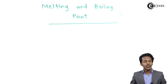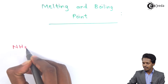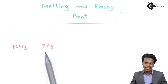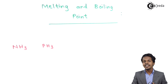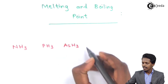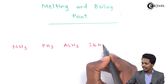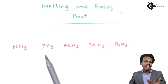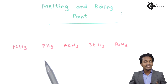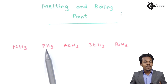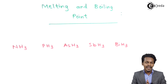The next property is melting point and boiling point. It has been found that NH3 has a higher boiling point compared to PH3. The reason is that NH3 has a capacity to form hydrogen bonding. But if we compare the rest — AsH3, SbH3, and BiH3 — the boiling point and melting point increase from PH3 to BiH3. So only NH3 has an anomalously higher boiling point compared to PH3 due to hydrogen bonding.